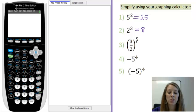So, in example 3, we have a fraction to the fifth power. When we want to type in the whole fraction to the fifth power, we're going to have to input it in parentheses, just like it's written.